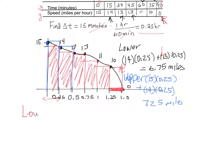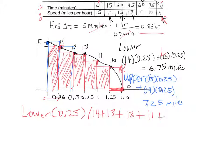All the widths are 0.25, so I can factor that out. The lower estimate is 0.25 times the sum of the lower heights: 14 plus 13 plus 13 plus 11 plus 10 plus 0, and I get 15.25 miles.